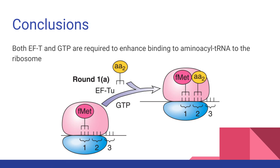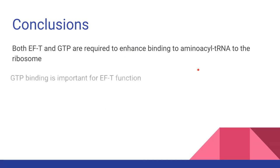This data is consistent with the elongation model. EF-TU, along with GTP, binds aminoacyl-tRNA to the A site of the ribosome. In addition, we can conclude that GTP binding is important for EF-T function.